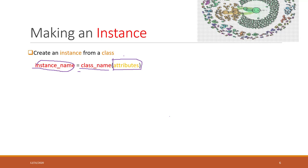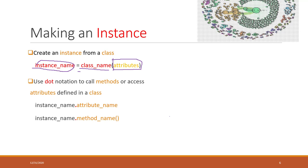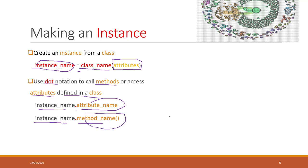Once we have this instance, or once we have this object, we can use dot notation to call those methods or to access those attributes defined in the class. For example, in our previous example, we can see mycorolla.maker, which will tell you that the maker is Toyota. And we can also see mycorolla.report, which will report the maker and also the model. That is the way to call the method or the function, and that is the way to get the attribute.